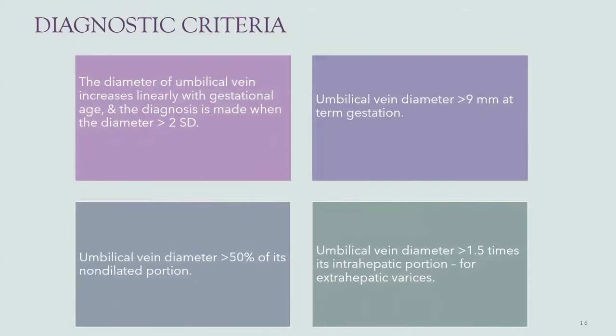The diagnostic criteria are as follows. The diameter of the umbilical vein increases linearly with gestational age, and the diagnosis is made when the diameter is more than 2 standard deviations. Other criteria include umbilical vein diameter more than 9 mm at term gestation, and umbilical vein diameter more than 50% of its non-dilated portion.